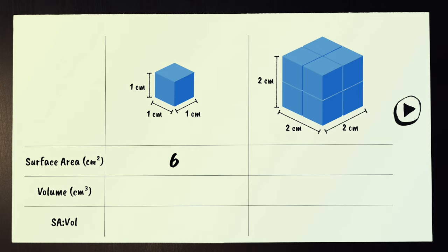The larger cube is two centimeters by two centimeters by two centimeters, so each face is four centimeters squared. With six faces, it has a total surface area of 24 centimeters squared. So the larger cube has a larger surface area, but it also has a larger volume.